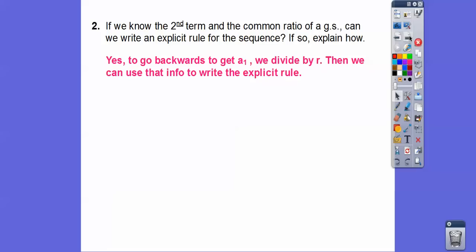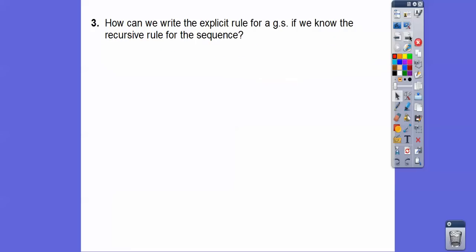Well, to get the first term, you just go backwards. And when you go to the left, you divide by r. So we can get the first term, no problem, just dividing the second term by r. And then we can write the information with the explicit rule right there. And the last one is,